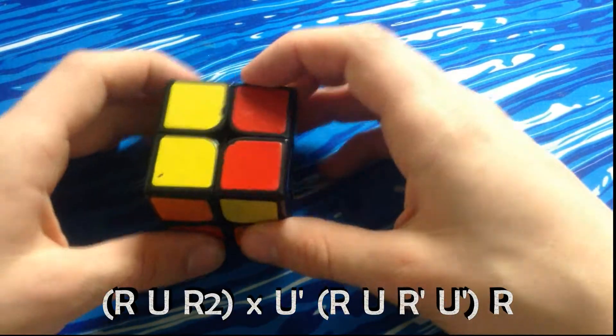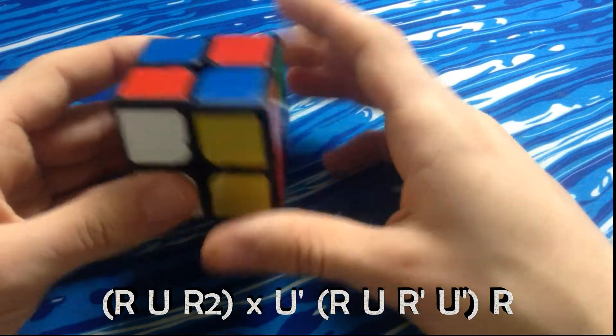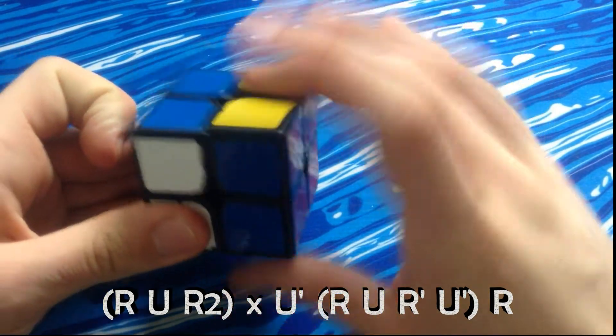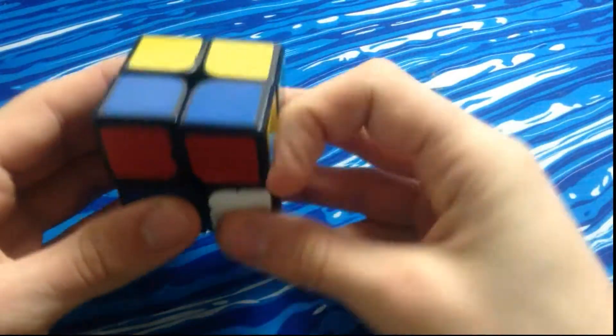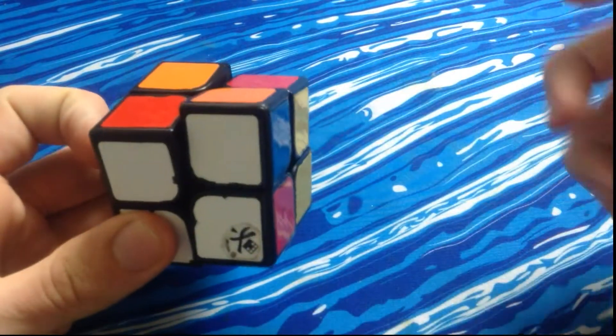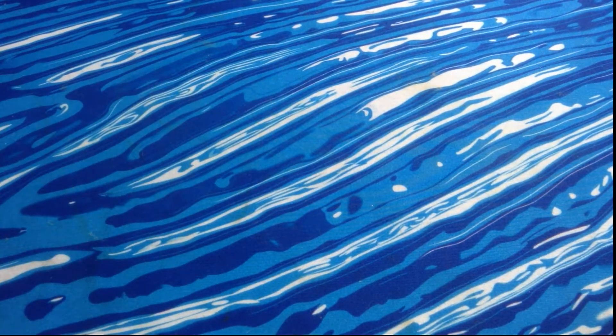Here's the next case. It's a T-case. This one's quite simple. Just R U R2 x, that's the first trigger, and then it's a U', and then it's just the sexy move R. So as you can see, that's quite simple to learn. So it's just R U R' and then x U', sexy move, followed by an R. So see, that one's not that difficult either.